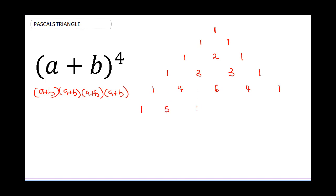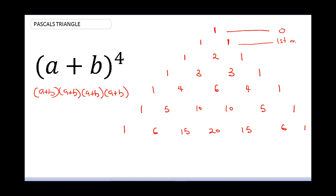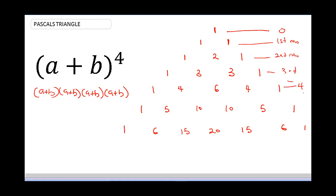Continuing: 4 plus 6 is 10, 6 plus 4 is 10, then 5, and edge is 1. One more row: 1, 6, 15, 20, 15, 6, 1. Notice: this is the zero row, then first, second, third, fourth, fifth, and sixth row.